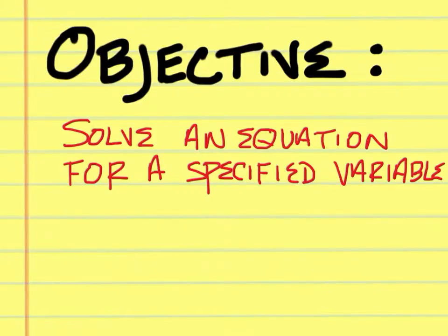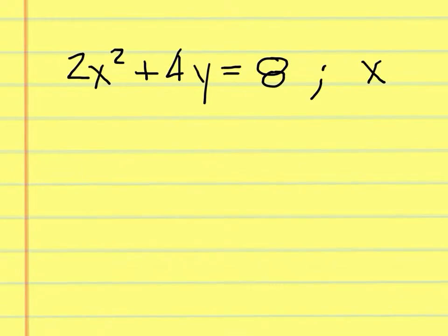Solve an equation for a specified variable. To get x by itself, you must undo everything around it. When you're solving for a specific variable, you're doing the opposite of the order of operations. Instead of multiplication and division first, you're doing addition and subtraction first.